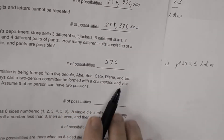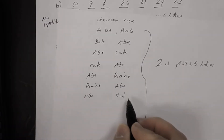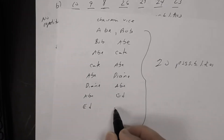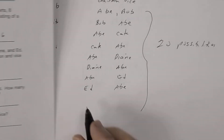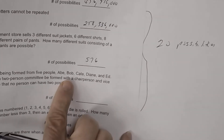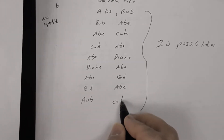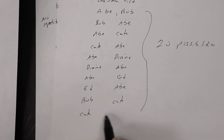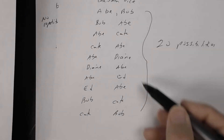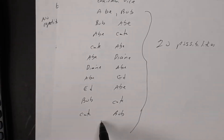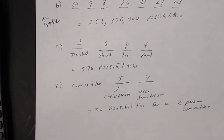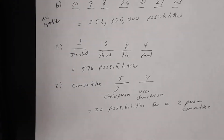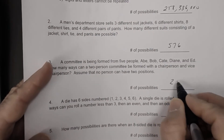Continuing: Abe and Ed, or Ed as chairman and Abe as vice chairman. Or Bob as chairman and Kate as vice chairman, or Kate and Bob. The answer for number 3 is 20.